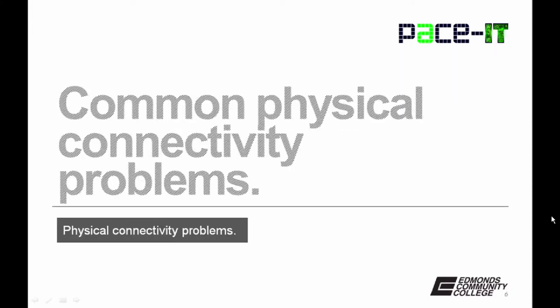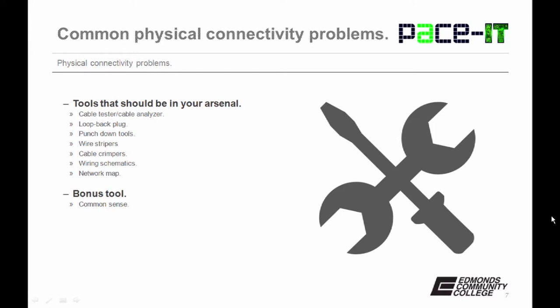And with that, let's move on to some common physical connectivity problems that you will come across. Before we talk about the actual problem, let's talk about some tools that should be in your arsenal. You should have a cable tester or cable analyzer. A loopback plug should be there. You need to have punch down tools, wire strippers, cable crimpers. You should know the wiring schematic. That should be in your arsenal. And a network map is also a great tool to have.